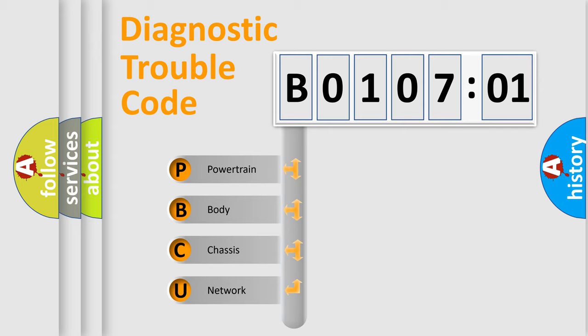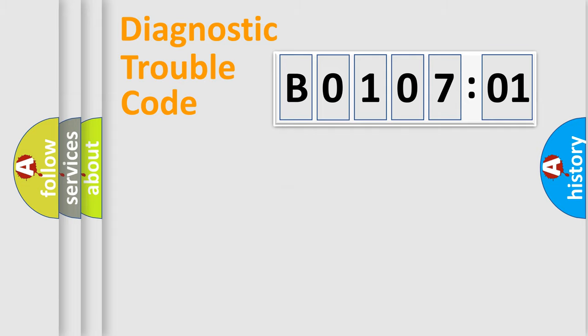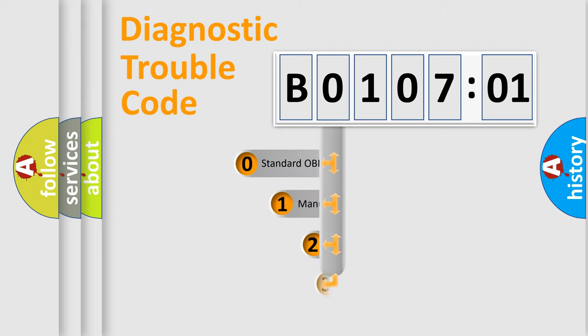We divide the electric system of automobile into four basic units: Powertrain, Body, Chassis, and Network. This distribution is defined in the first character code.